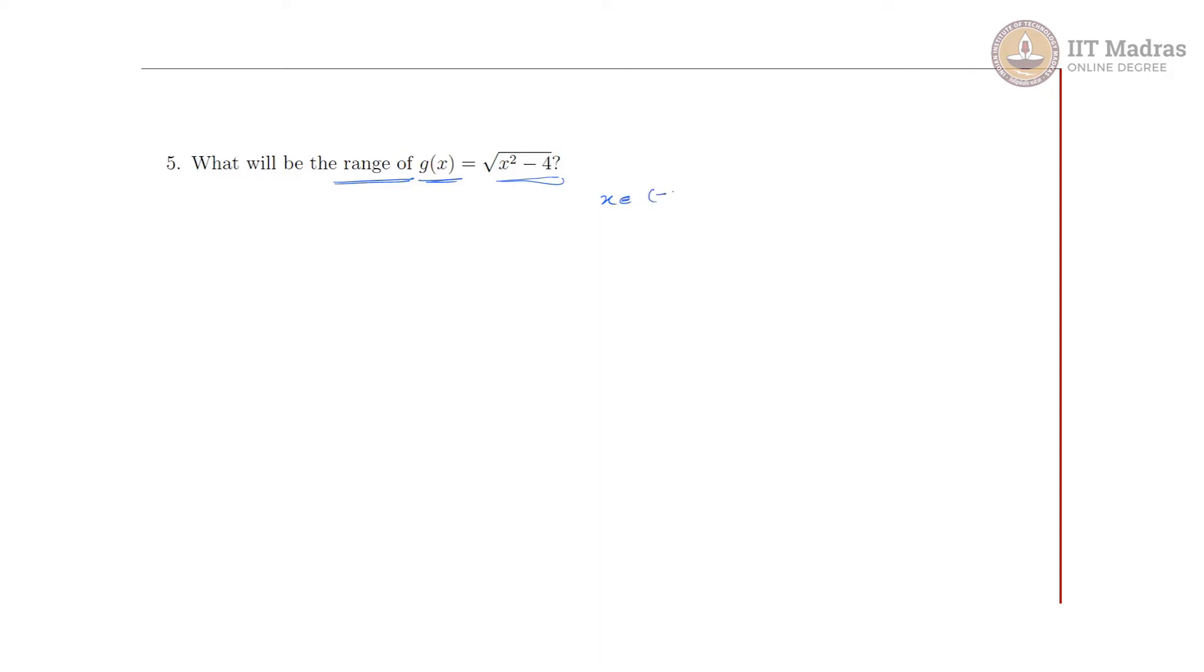At ±2 they are defined because we will get zero value. So for finding the range we just first need to find what the domain is. The domain will tell what will be the range.